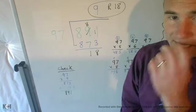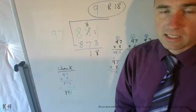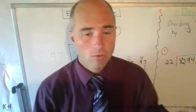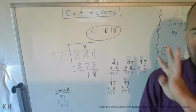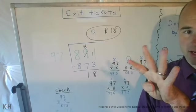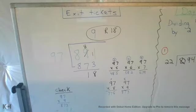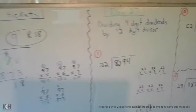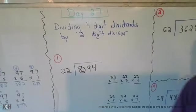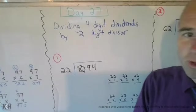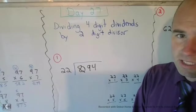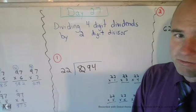With that being said, we're going to now move on to Day 27, which is a four digit dividend being divided by a two digit divisor.